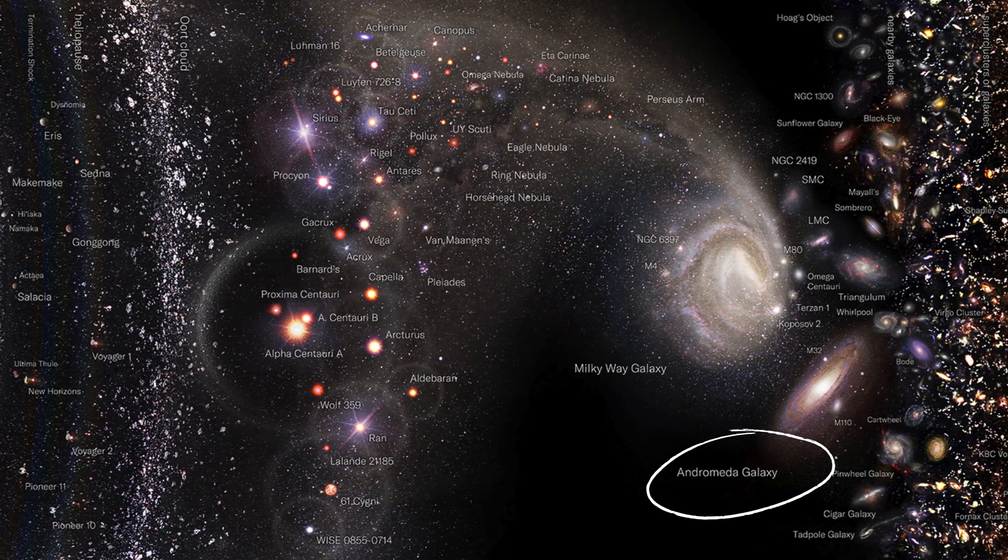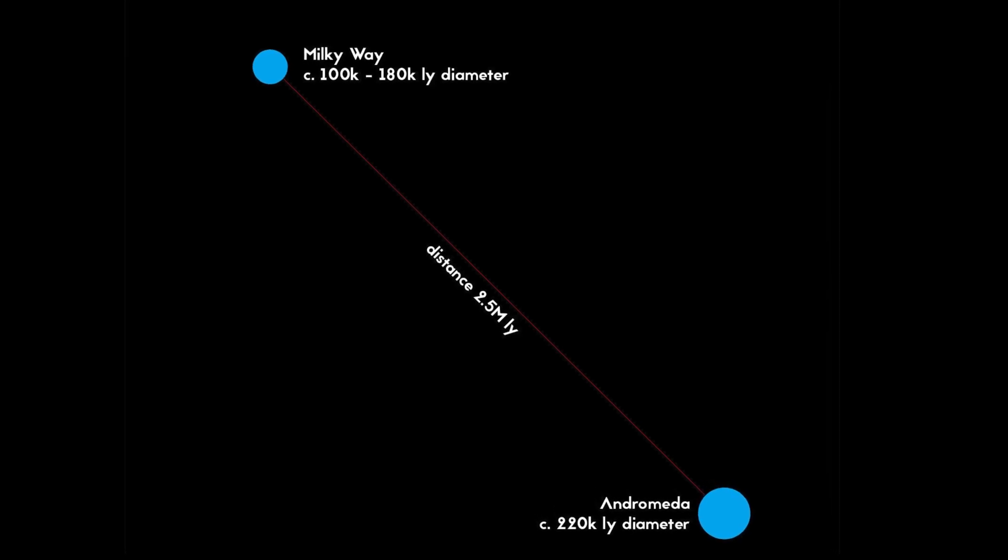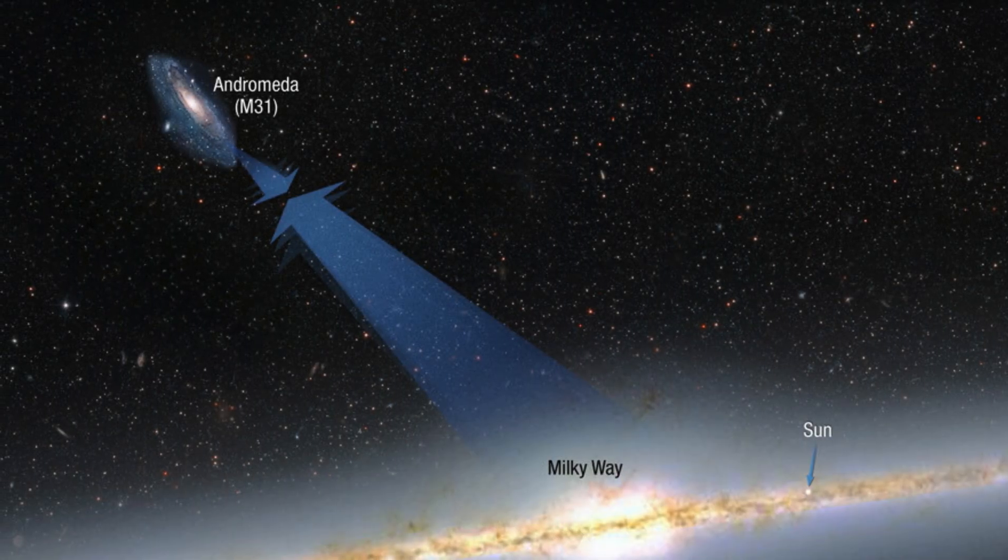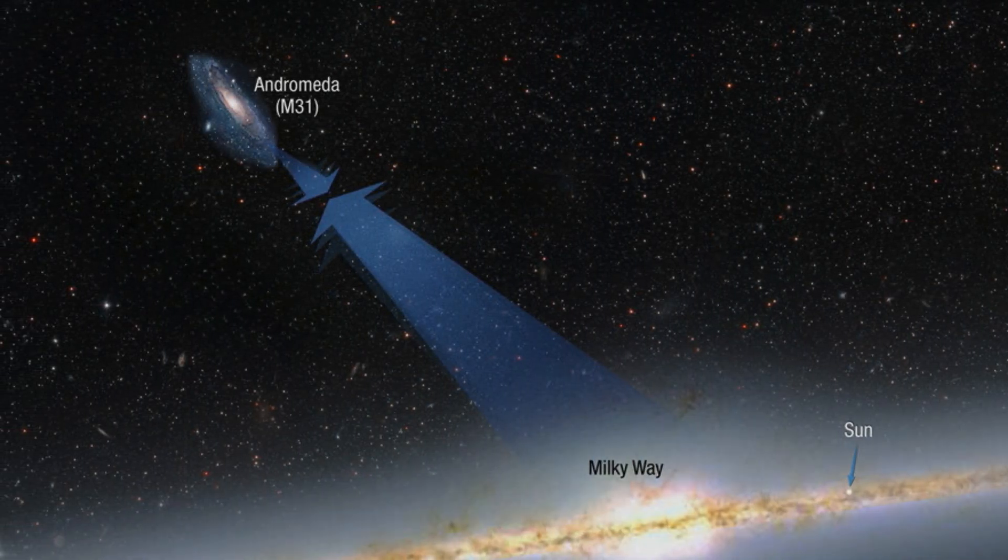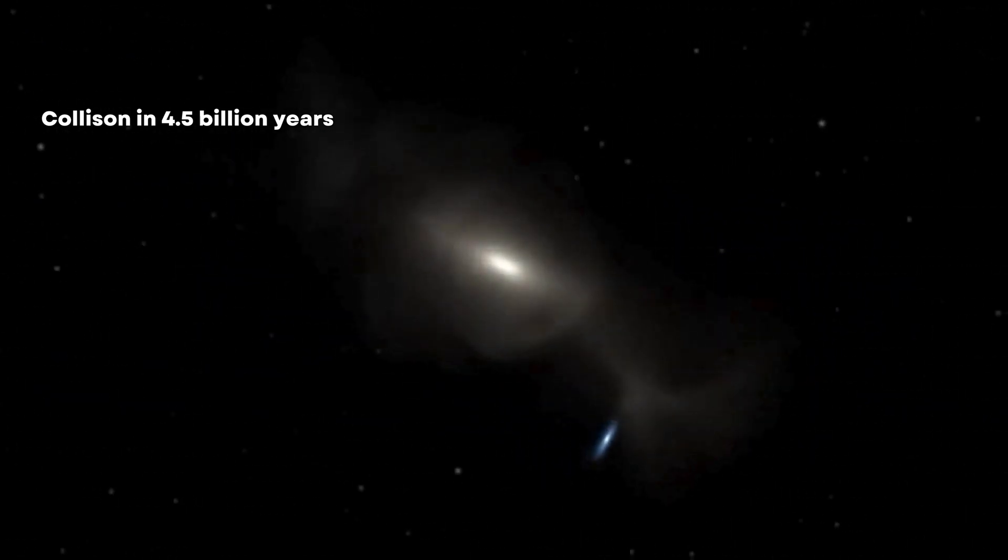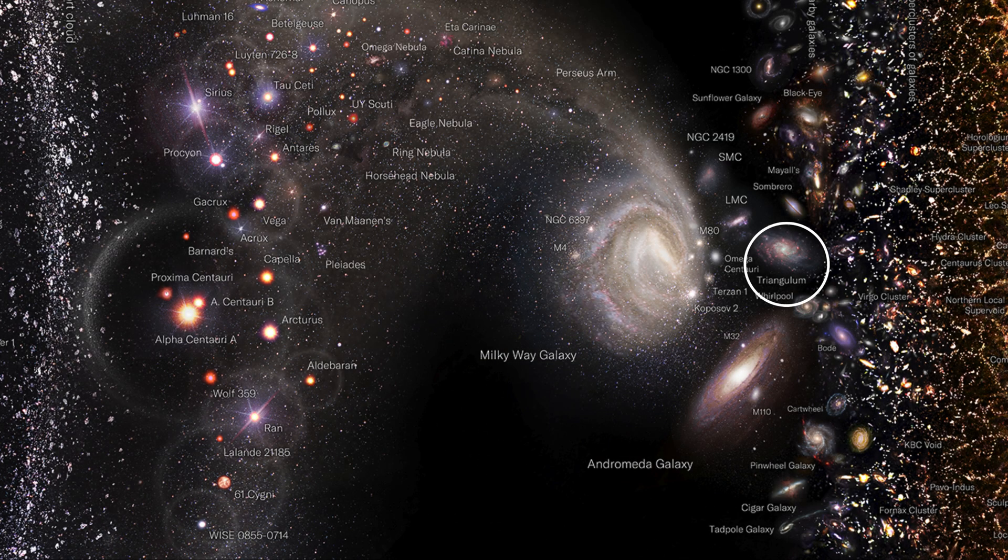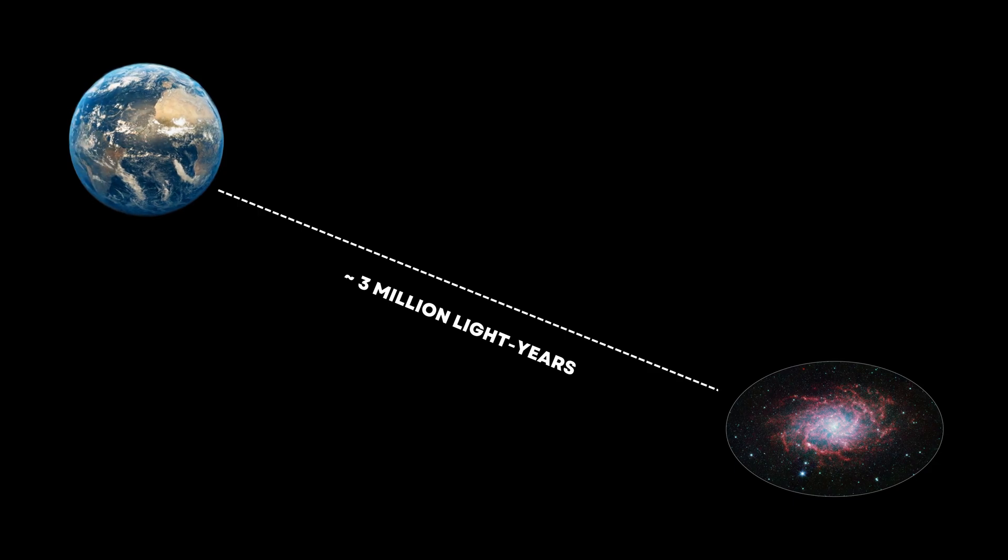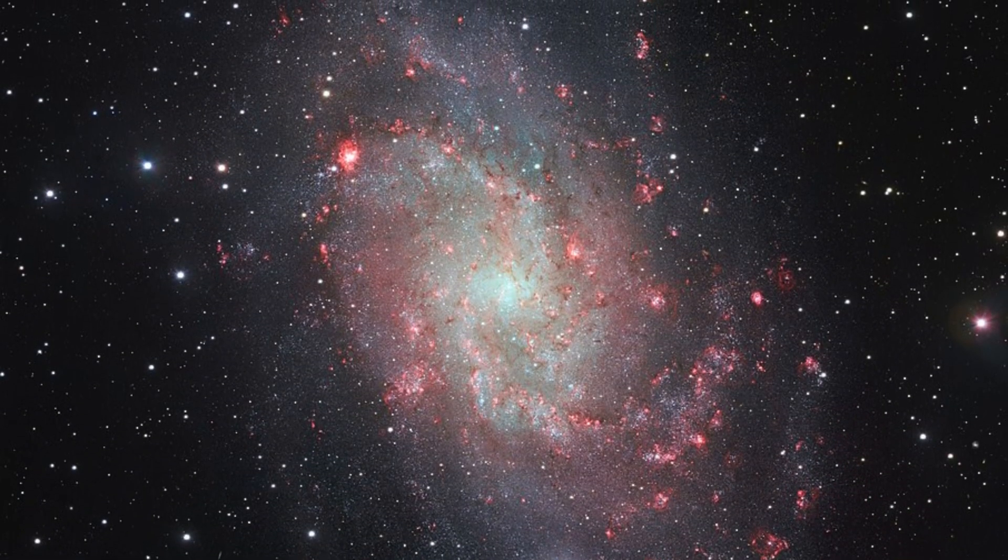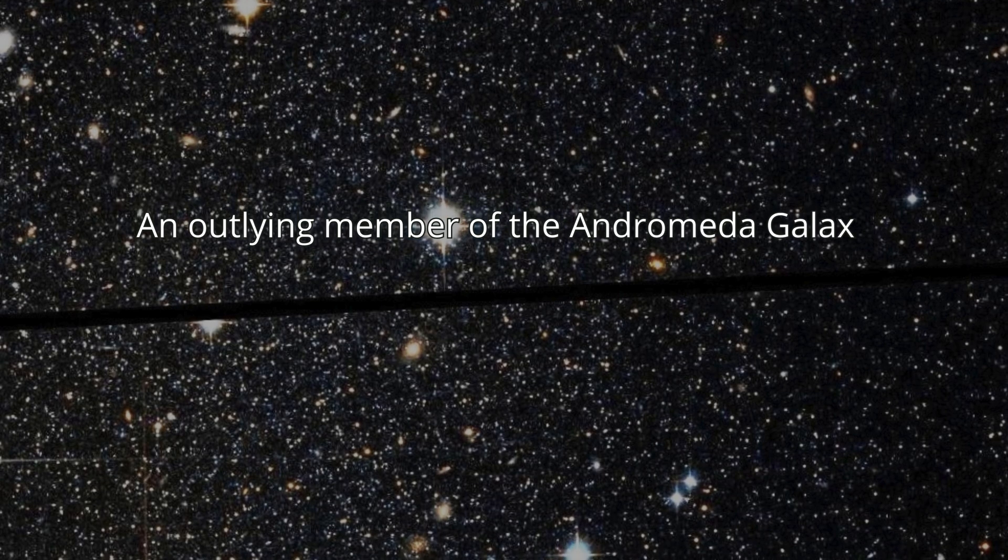Andromeda, our closest spiral galaxy neighbor, is about 2.5 million light years away. It's headed for a collision with our own Milky Way and in about 4.5 billion years, the two galaxies will merge to form a new galaxy. The Triangulum Galaxy, or M33, is about 3 million light years from Earth and is the third largest member of the local group and an outlying member of the Andromeda Galaxy subgroup.